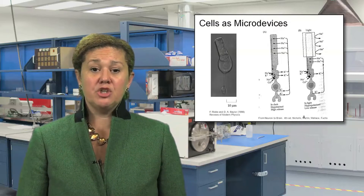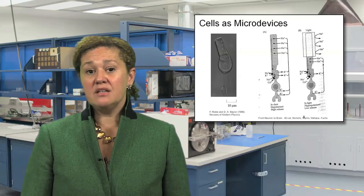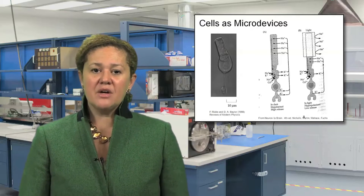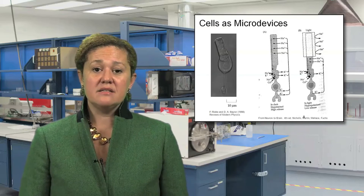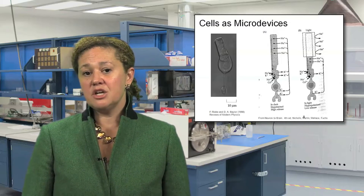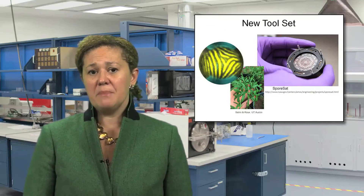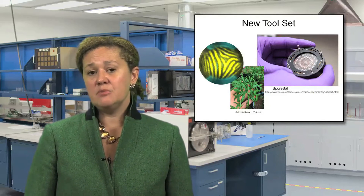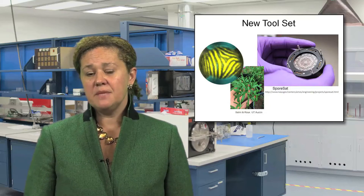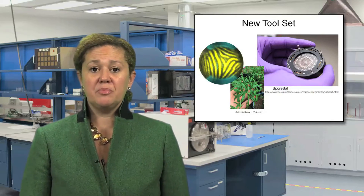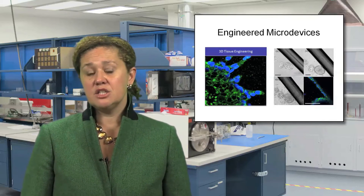Once you start to view cells in this framework, you'll start to see cells as microdevices. You'll think of the photoreceptors in your retina as organic single photon detectors, and you'll see new ways to re-engineer and design cellular microdevices, as well as engineer non-living devices inspired by biology and nature. You'll also have a new toolset for engineering microdevices to interact and communicate with cells, such as this microchip designed to monitor plant cells in space, and this tissue-engineered brain mimic designed to study brain tumors.